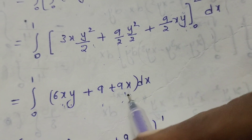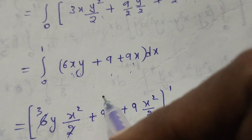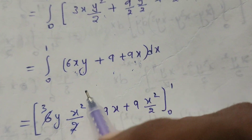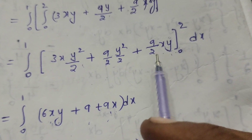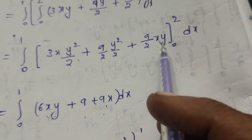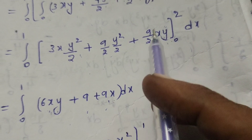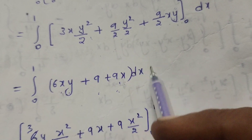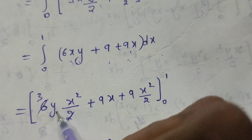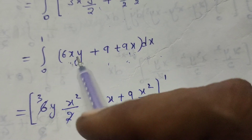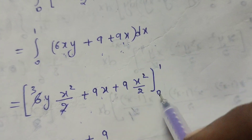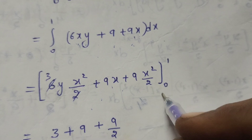Now integrating with respect to x with limits 0 to 1: integral of 6x gives 6·(x²/2), integral of 9 gives 9x, and integral of 9x gives 9·(x²/2). Substituting the limits 0 to 1 by substituting the upper limit x = 1.